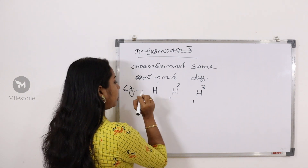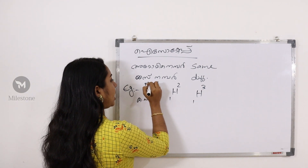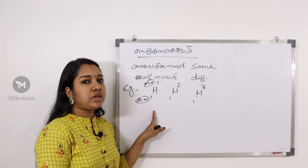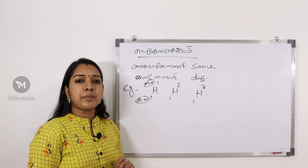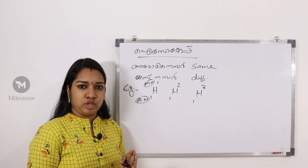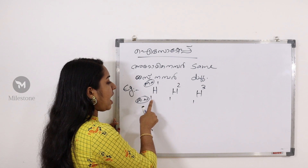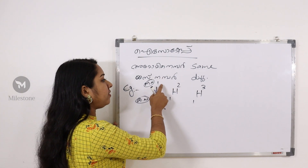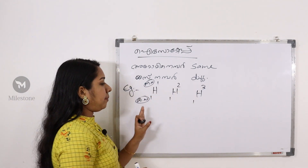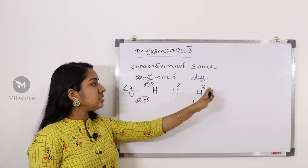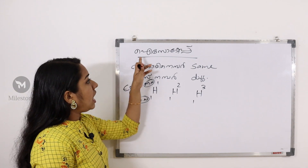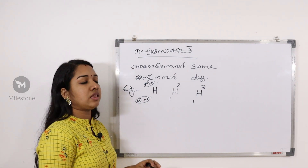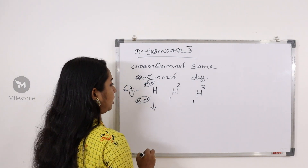Atomic number and mass number: the first number represents the atomic number, the second represents the mass number. Here you can see that hydrogen's atomic number is 1, 1, 1 — the same. The mass number is different. That is the isotope.